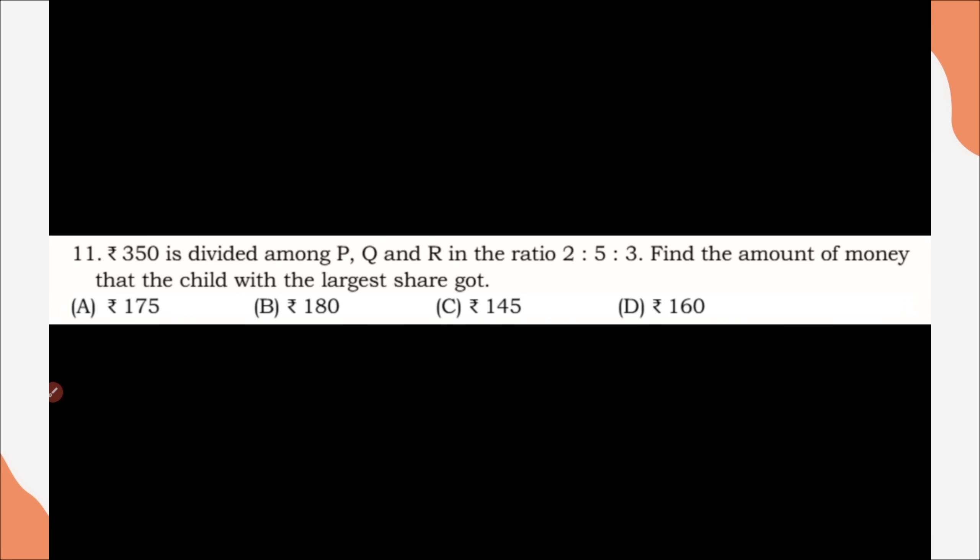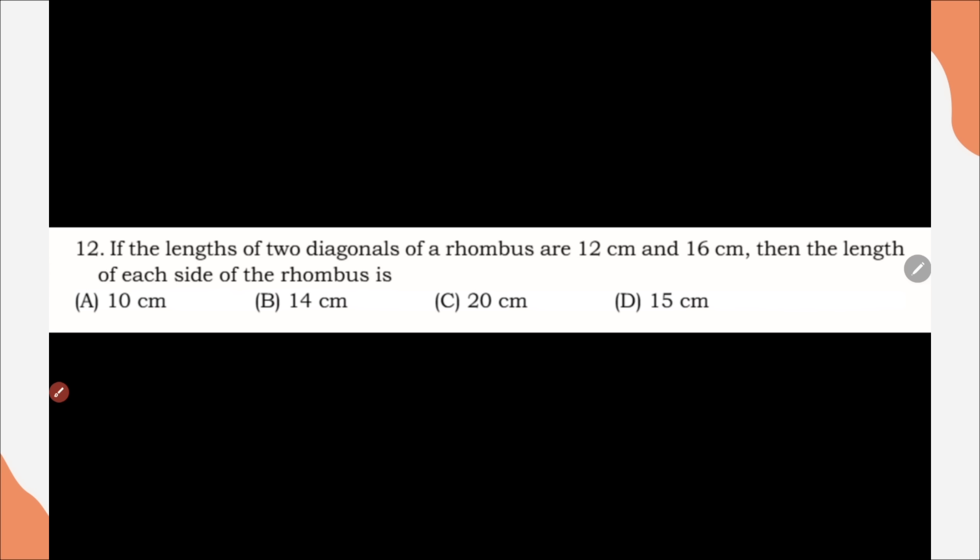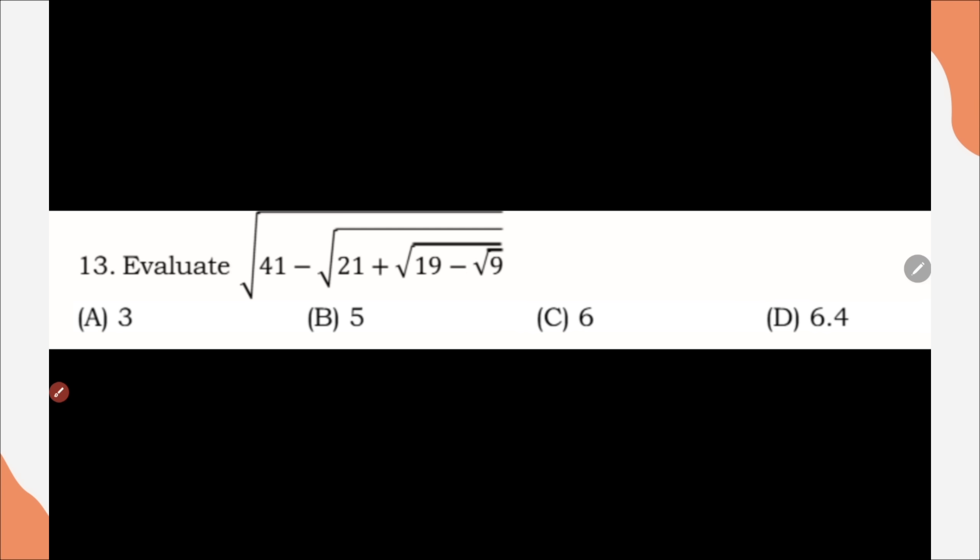Question number 11, 350 is divided among P, Q and R in ratio 2 is to 5 is to 3. Find the amount of money that the child with largest share got. Correct option is option A, 175. Question number 12, if the length of two diagonal of a rhombus are 12 cm and 16 cm, then the length of each side of rhombus is, correct option is option A, 10 cm. Question number 13, evaluate, correct option is option B, 5.